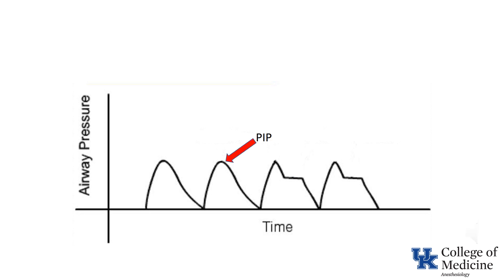With an inspiratory pause, after the ventilator delivers the predetermined tidal volume, it holds the volume of air in the lung for a variable period of time before cycling to exhalation. This airway pressure-time curve shows the inflation hold being added during the expiratory time, as evidenced by the fact that time A and time B are equal. That's not always what happens.